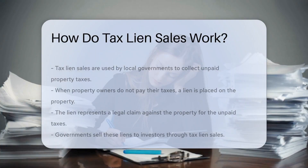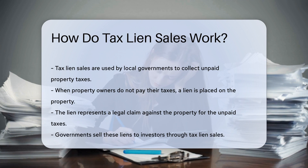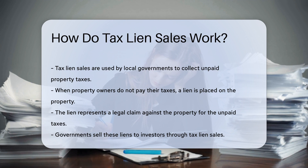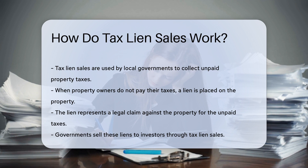Tax lien sales are a process used by local governments to collect delinquent property taxes. When property owners fail to pay their taxes, the government can place a lien on the property. This lien is a legal claim against the property for the unpaid taxes. The government then sells these liens to investors through a tax lien sale.